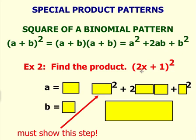So in this example, we have the binomial 2x plus one. That's a binomial, and it's being raised to the power of two. So we're squaring the binomial 2x plus one. Let's identify the a value in this. We have 2x. The b value in this problem is one.